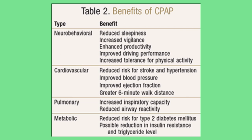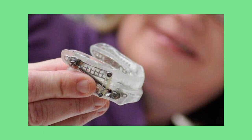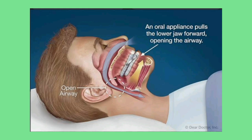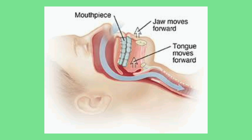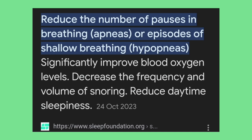Some people use a mouthpiece. A mouthpiece is used to thrust the lower jaw forward during sleep, keeping the airway open. Some benefits of the mouthpiece are: it reduces the number of pauses in breathing or episodes of shallow breathing, it helps improve blood oxygen levels, it helps reduce the frequency and volume of snoring, and it reduces daytime sleepiness.